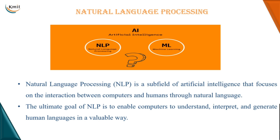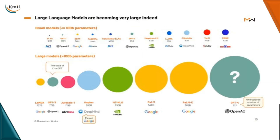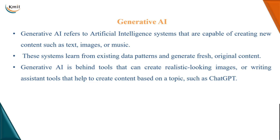Humans have the ability to understand natural language, and we give machines this ability through natural language processing. NLP focuses on the interaction between humans and computers through natural language. The ultimate goal of NLP is to make computers understand, interpret, and generate human language text — chatbots, language translation, and Google Translate are examples. Large language models are advanced AI models working on large amounts of data to understand human language. LLMs have evolved from small models like ELMo to large models like GPT-4 which we use today.